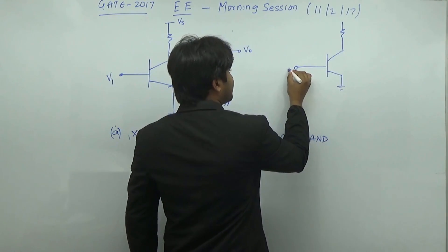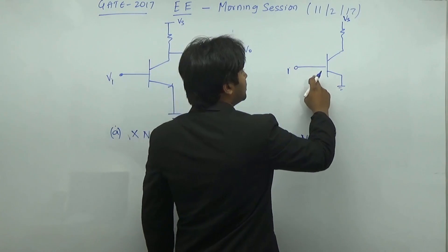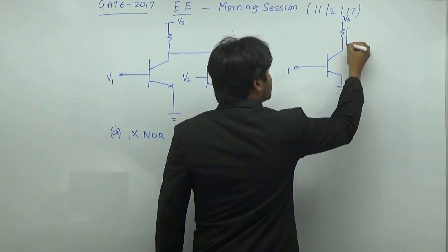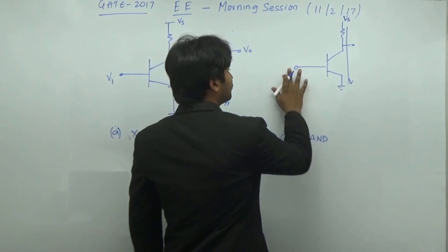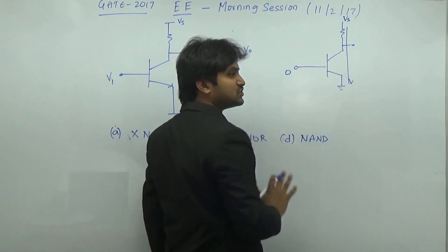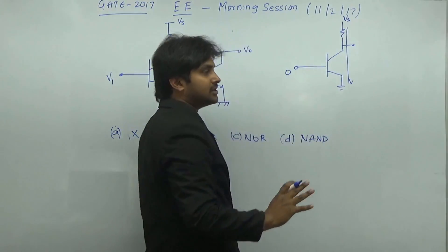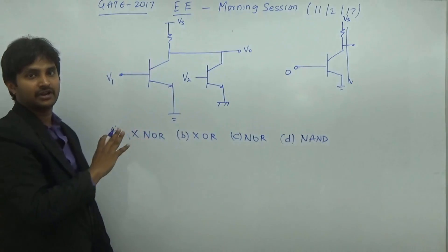If you are giving the input as 1, this is your source. Whatever voltage that is here is going to flow inside, and the voltage at this particular point will be equal to 0. When the voltage is equal to 0, the BJT is in off state. And in off state, you have the total voltage available here. So based on how the particular BJT is working, we can answer this question.